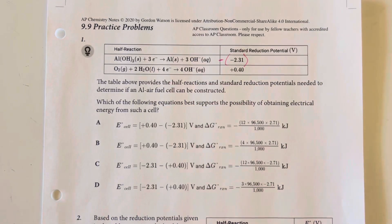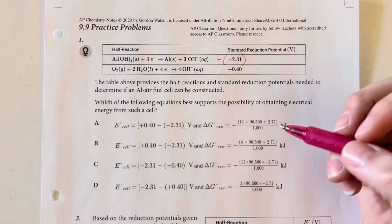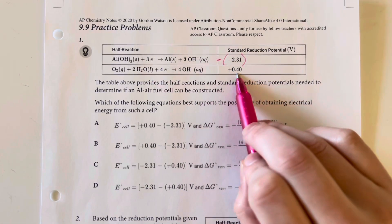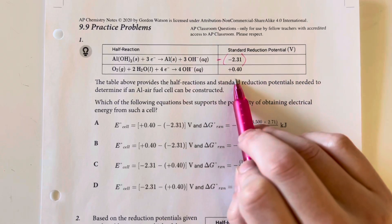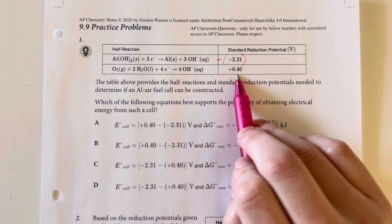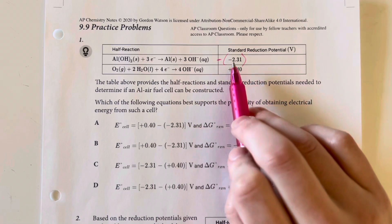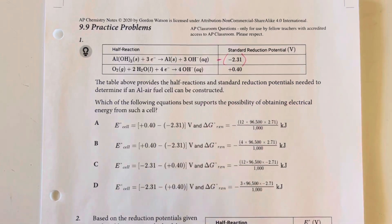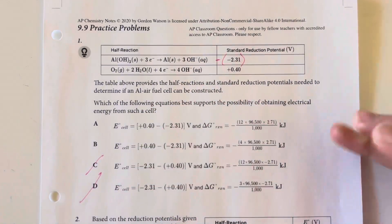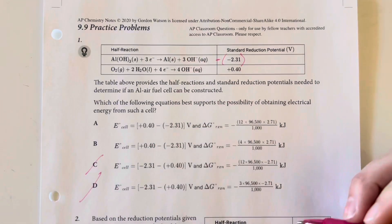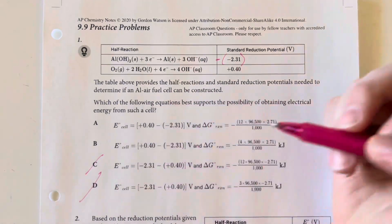When we find our energy for the cell, we are going to keep the plus 0.4 volts for the production of the hydroxide ion the same, but we will be flipping the sign for the aluminum hydroxide. So that eliminates option choices C and D, leaving us exclusively with A and B.